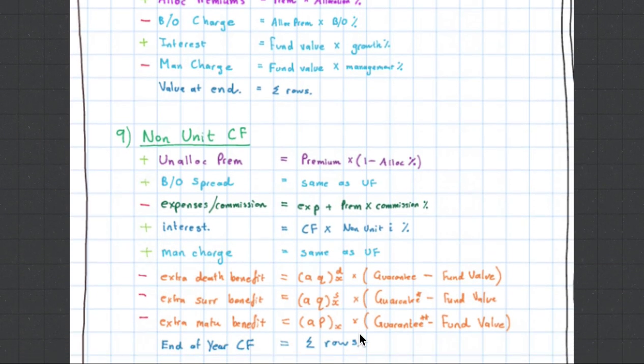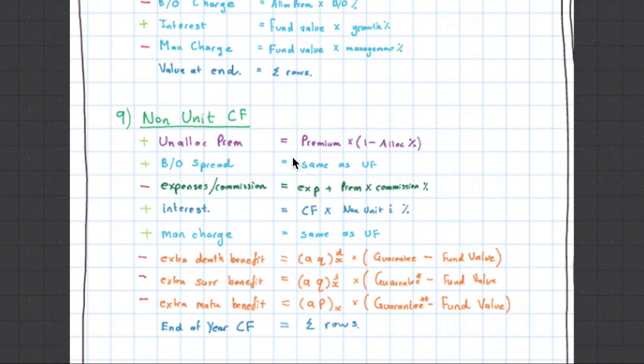Then you're also going to calculate the non-unit cash flow. So here you get the unallocated premium, plus the bid-office spread, less your expenses, plus interest. This is a different type of interest, the non-unit interest. It will normally be a little bit lower, but it doesn't have to be. Plus management charges, and then here you can see there's death benefits, surrender benefits, and even maturity benefits. Then you sum those things up.